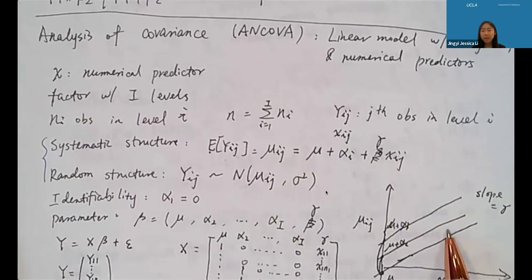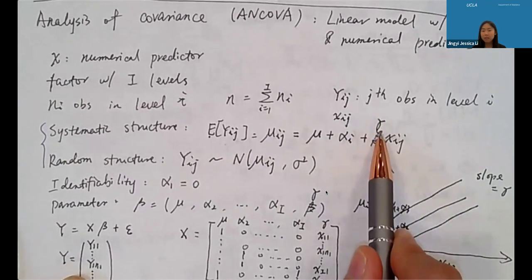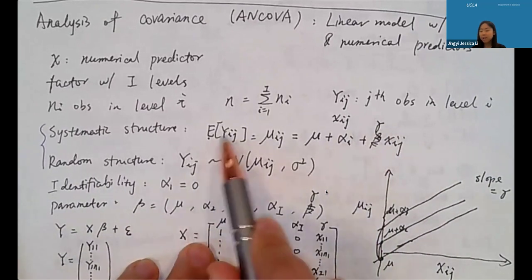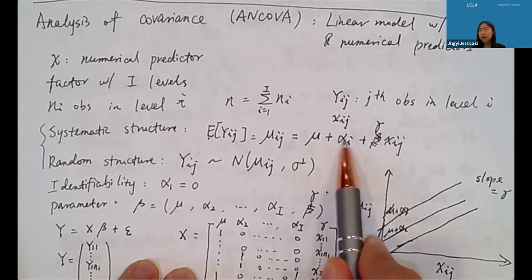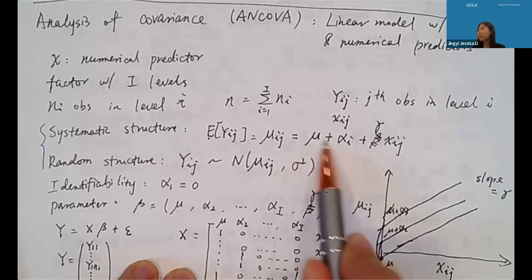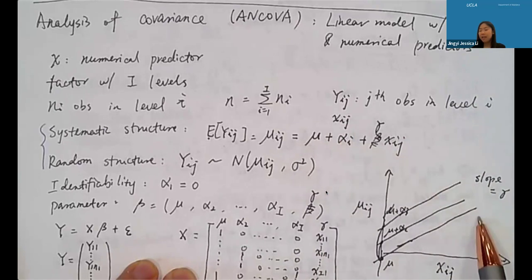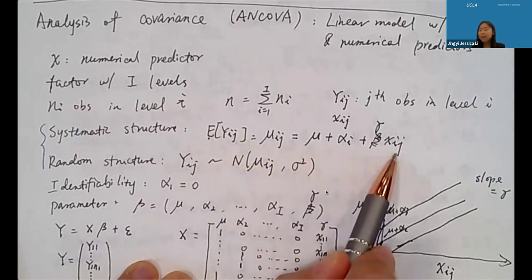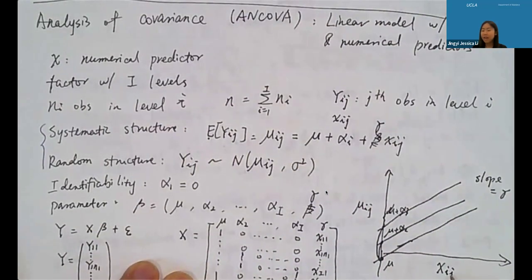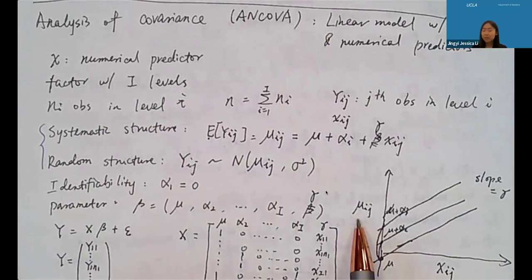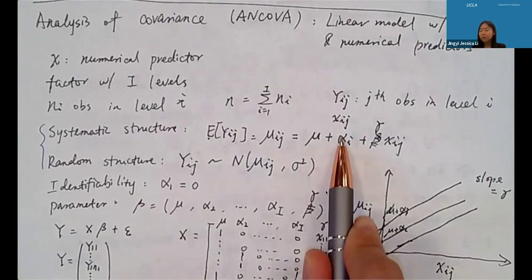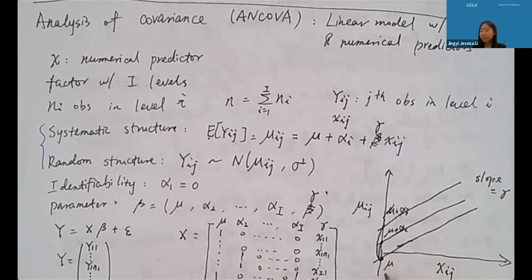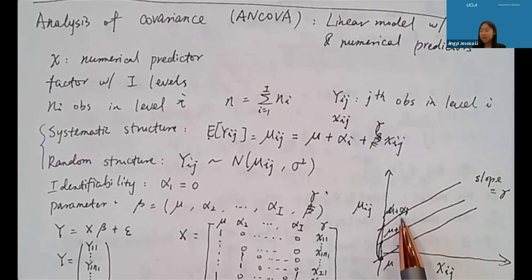The systematic structure for the mean of y_ij is: E[y_ij] = mu_ij = mu + alpha_i + gamma * x_ij. Here mu is the intercept, alpha_i is the contribution of factor level i, and gamma is the common slope for the numerical predictor. Because gamma is common across all levels, the factor only changes the intercept. With three factor levels, you get three parallel mean lines sharing the same slope gamma but with intercepts mu, mu + alpha_2, and mu + alpha_3.